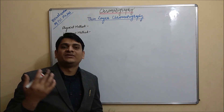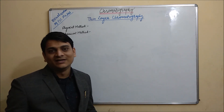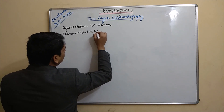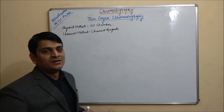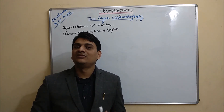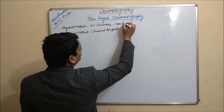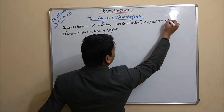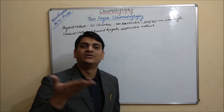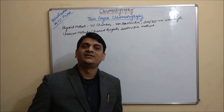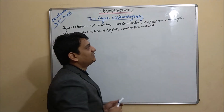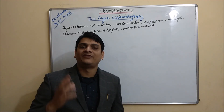In physical method we are using UV chamber, but in chemical method we are using various chemical tests for detection of various types of spots. UV method is non-destructive method. In UV we are using two wavelengths which is 254nm and 365nm. By using UV light we can visualize or observe our spots in the TLC plate.